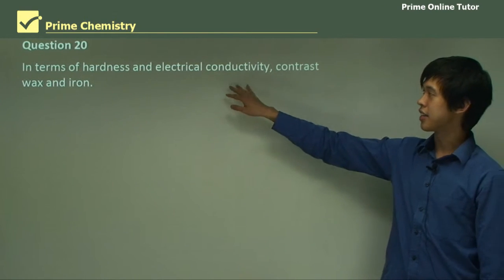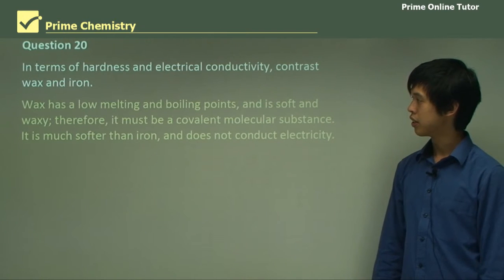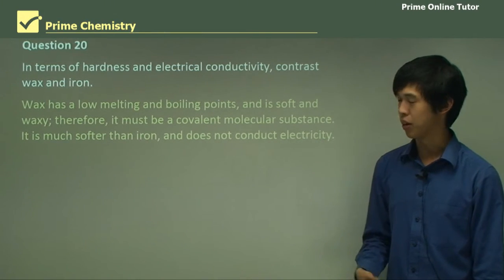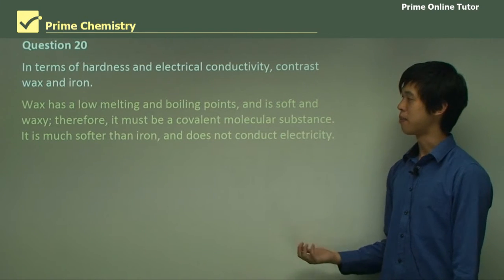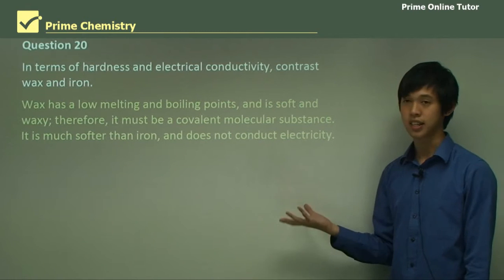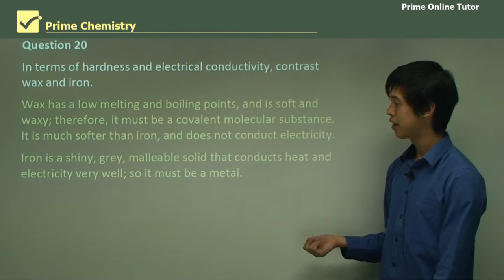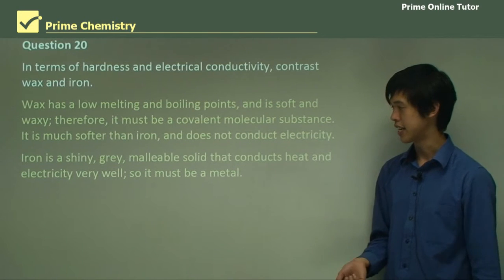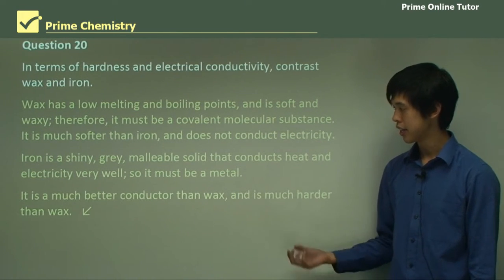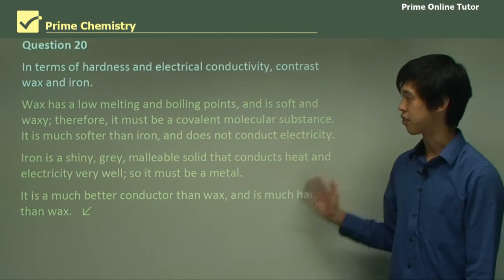In terms of hardness and electrical conductivity, contrast wax and iron. Wax has a low melting point and boiling point, is soft and waxy — therefore it must be a covalent molecular substance. It is much softer than iron and does not conduct electricity well. Iron is a shiny, grey, malleable solid that conducts heat and electricity very well, so it must be a metal. Iron is a much better conductor than wax and is much harder than wax as well.